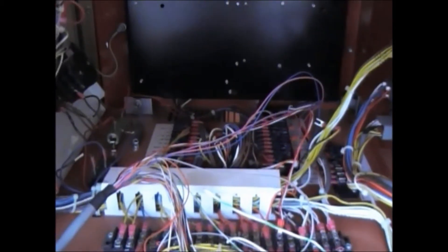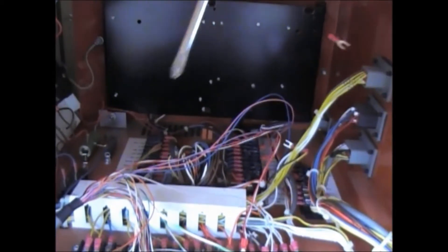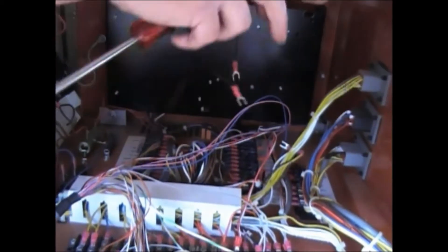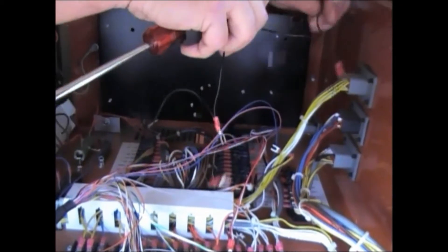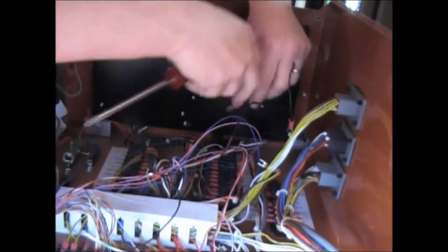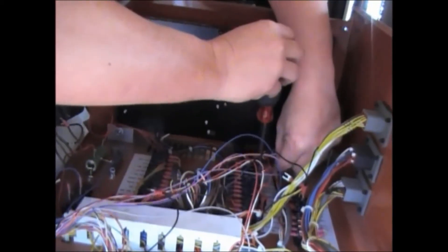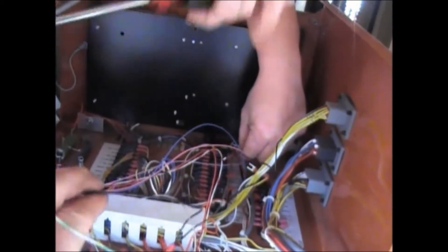Now the last thing we're going to do is to connect the commons of all three relays. So relay 1 common, relay 2 common, relay 3 common are all going to be connected together, and then they are going to be attached to DC ground.